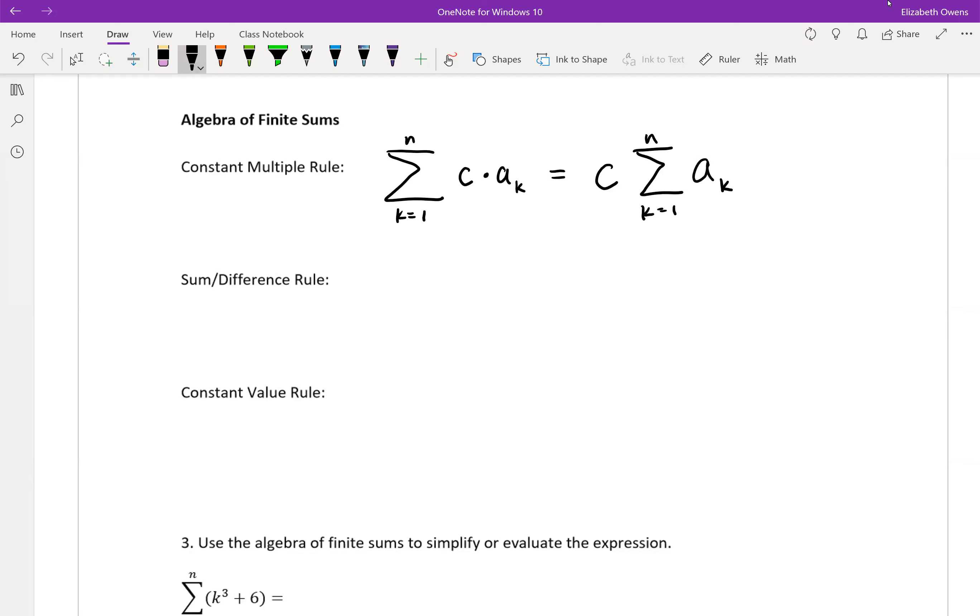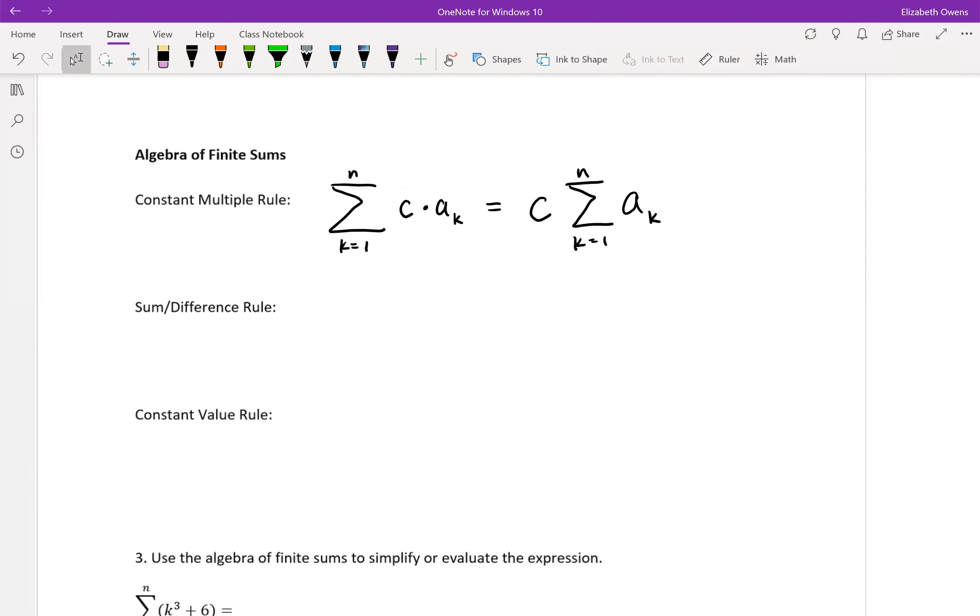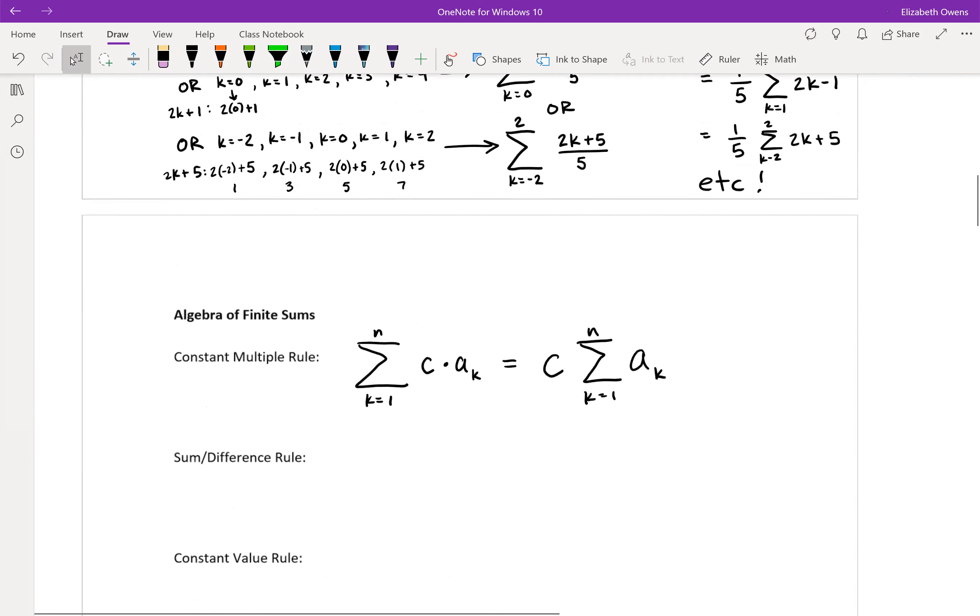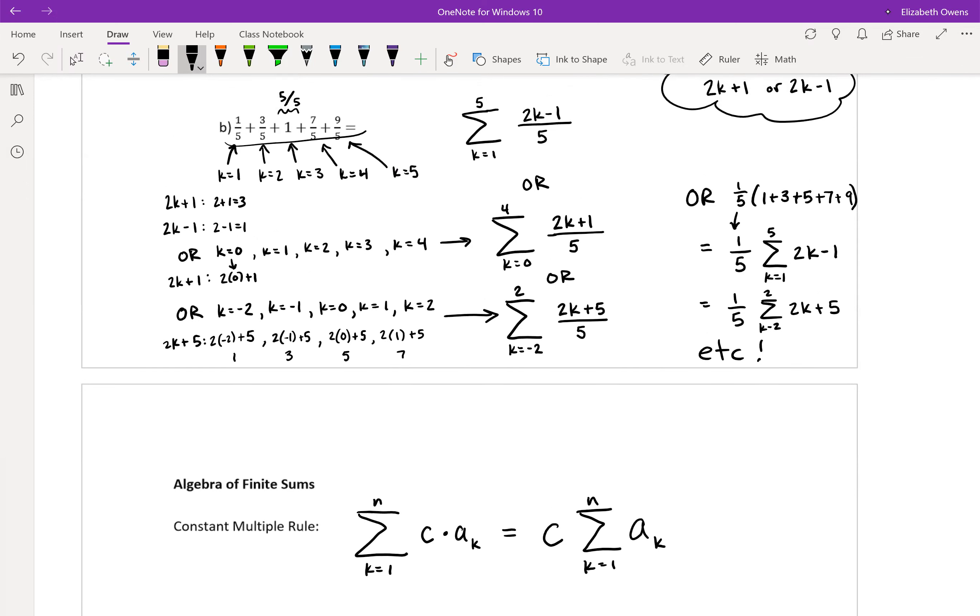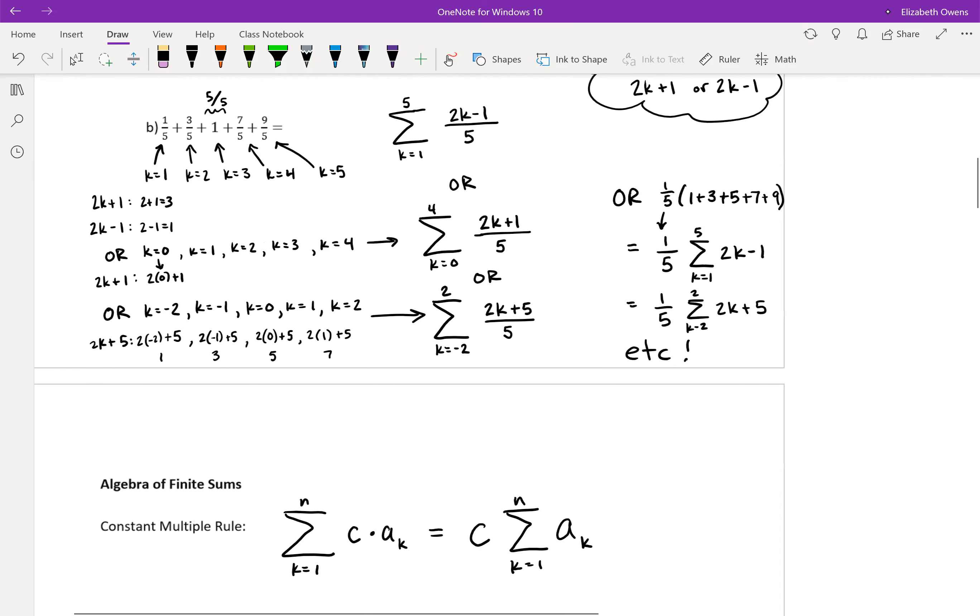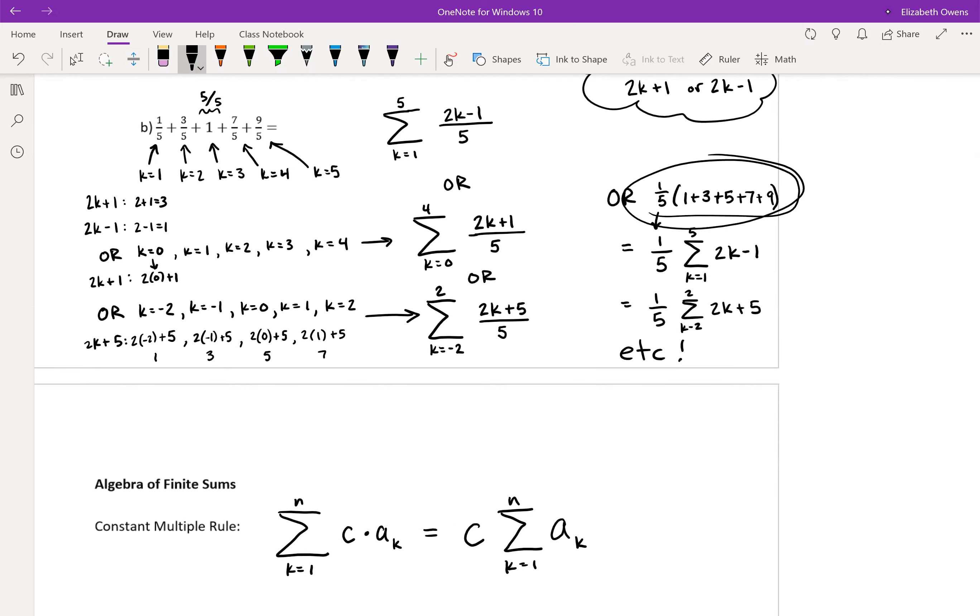So we saw that on the last example with that one-fifth that was multiplying everything. Here where we had our fractions, all of them were like one-fifth times our odd numbers.